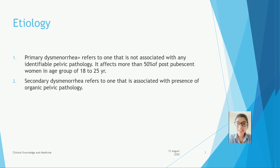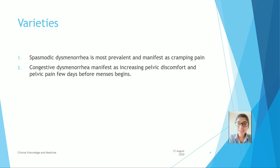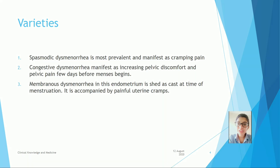Varieties: Spasmodic dysmenorrhea is most prevalent and manifests as a cramping pain. Congestive dysmenorrhea manifests as increased pelvic discomfort and pelvic pain a few days before menses begin. Membranous dysmenorrhea occurs when the endometrium is shed at the time of menstruation, and is accompanied by painful uterine cramps.